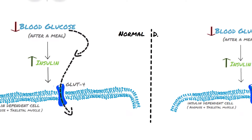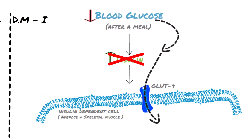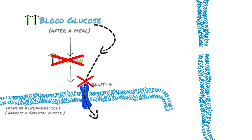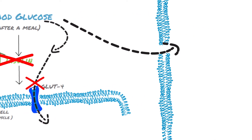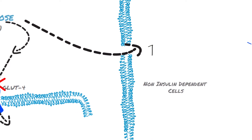But in diabetes mellitus type 1, there's an absolute deficiency in insulin, therefore there's an elevation in blood glucose level. Hence, increased levels of blood glucose enter into non-insulin dependent cells, causing elevated intracellular glucose concentration.